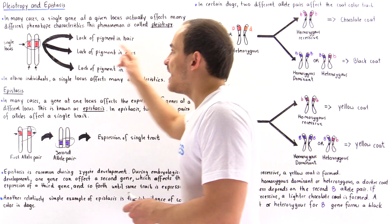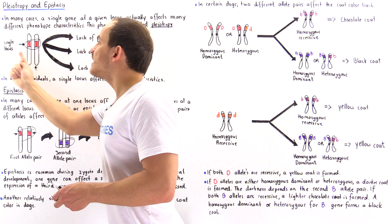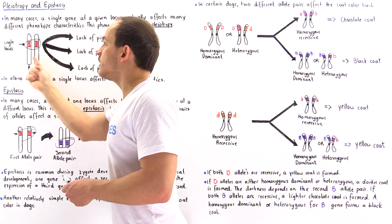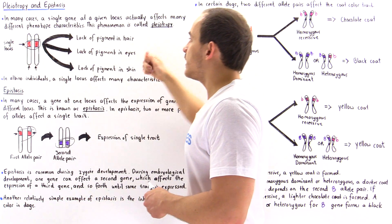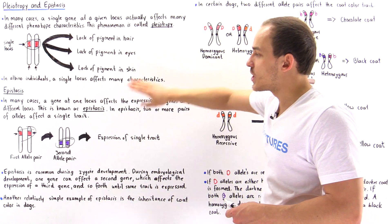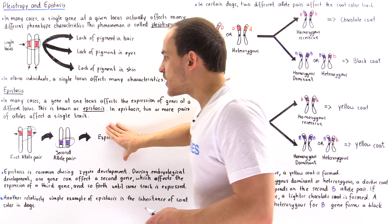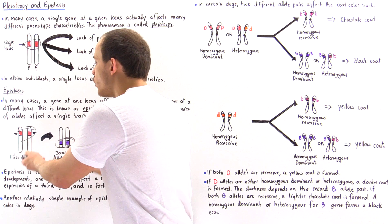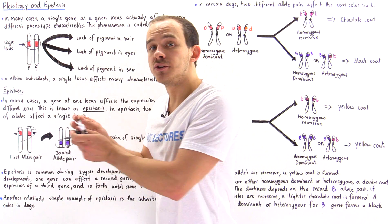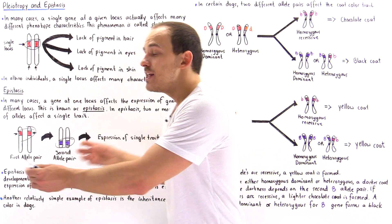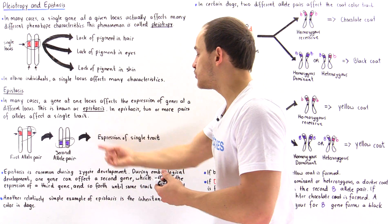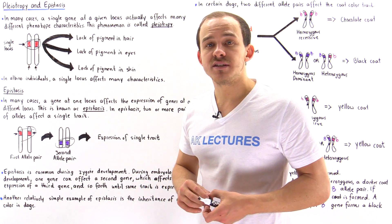In pleiotropy, it's a single locus — a single pair of alleles — that expresses many different types of traits. But in epistasis, it's the interaction between different allele pairs at different loci that ultimately produces or controls the expression of a single trait.